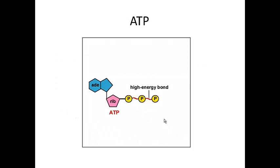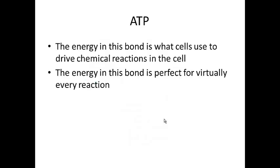This is a representation of an ATP molecule. As you can see, it's got a couple of rings, sugar rings like what you've seen, and these three phosphate groups. You can see between the second and third phosphates there is a high energy bond, and when this bond is hydrolyzed, energy is released. The energy in this bond is what cells use to drive chemical reactions in the cell. The energy of this bond is ideal for almost all reactions that take place in your body. So that is the energy that we're trying to get from our food.